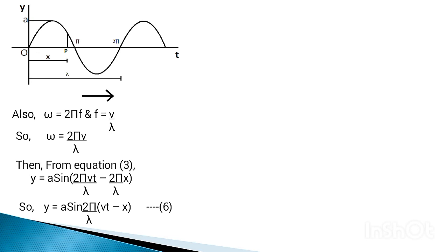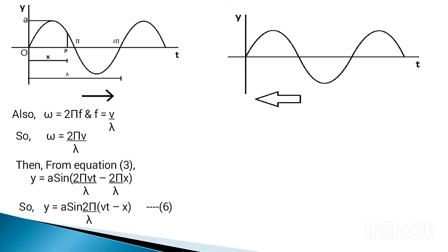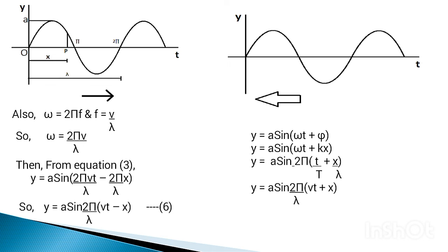We have considered a wave traveling from left to right. If we consider a wave traveling from right to left as shown in the figure, the equations of progressive waves change only in the sign between omega t and phi. When the wave travels from right to left, point P is encountered before point O, so the phase of particle at P leads the phase at O. Therefore the sign changes to positive: y equals to a sin(omega t plus phi). These are the required equations of progressive wave.